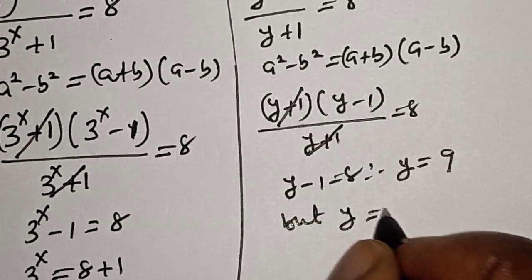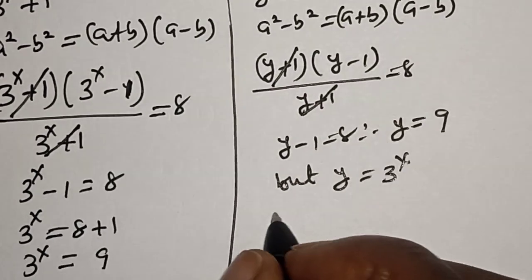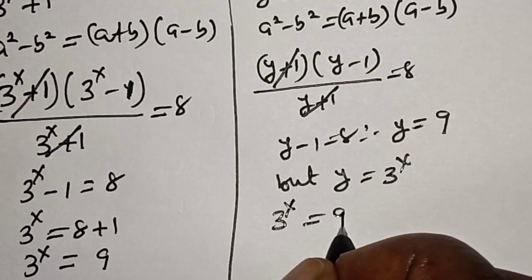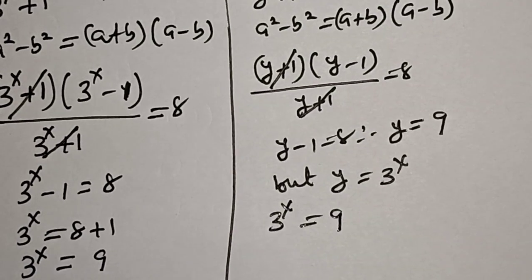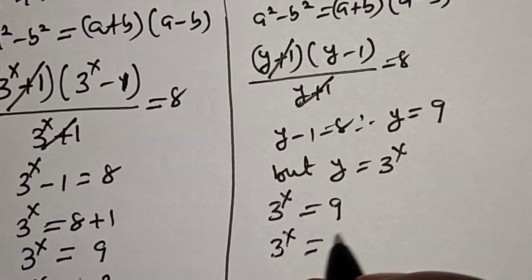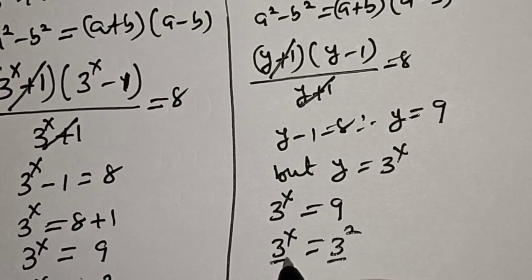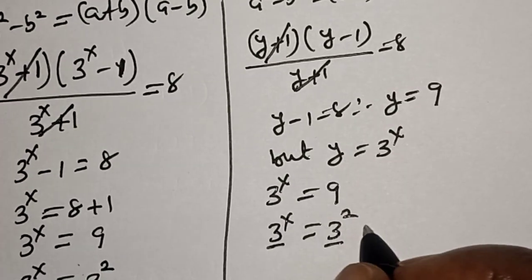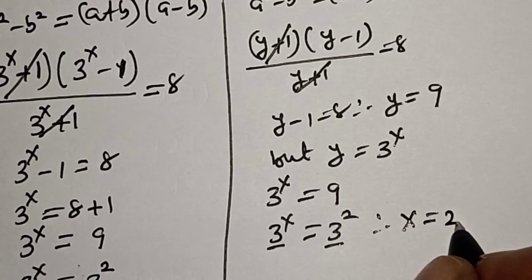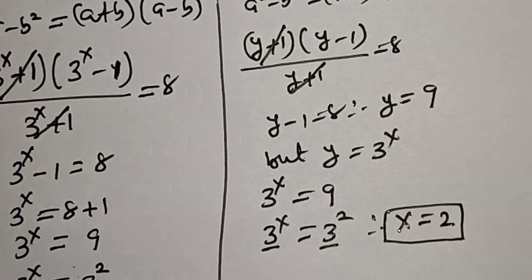But y is equal to 3 raised to power x. Then 3 raised to power x is equal to 9, which equals 3 raised to power 2. They have the same base, therefore x is equal to 2. So you can use that method.